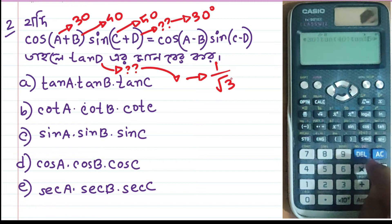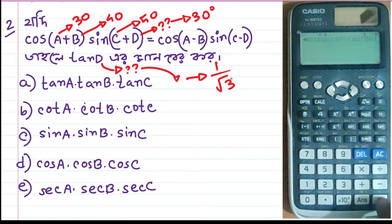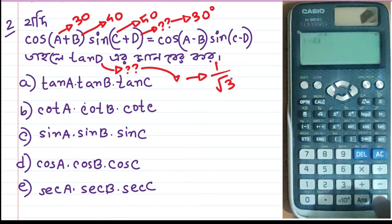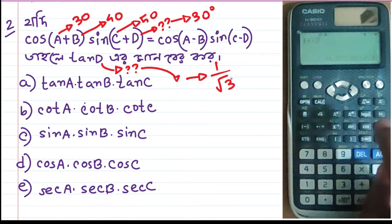So this is tan 10. We have to tell you tan 10 is 0.577, which equals 1 by root 3. So we start from this point.